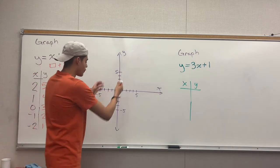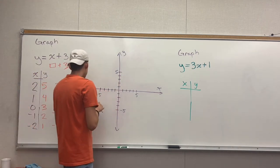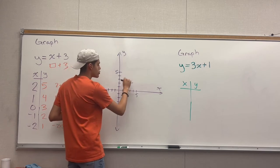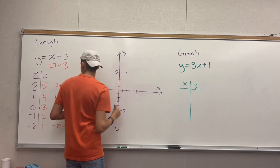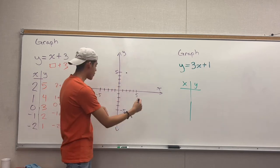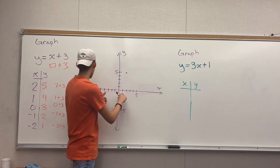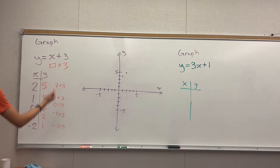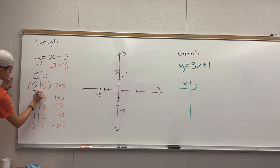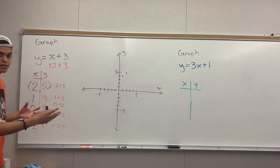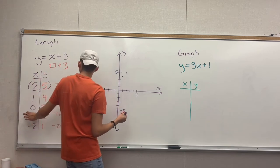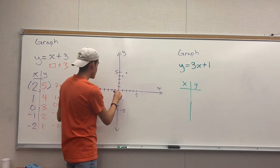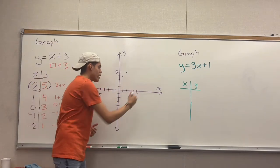Now you have your coordinates to put on the coordinate plane. For the point (2, 5): x is positive so you move 2 to the right, then up 5 — your point is right here. Next point (1, 4): go right 1, up 4. Next is (0, 3): you don't move left or right at all because x is 0 — you stay in the middle — then go 3 spaces up. That is where that point is.